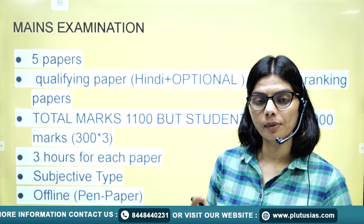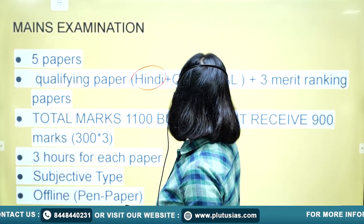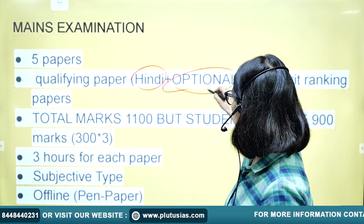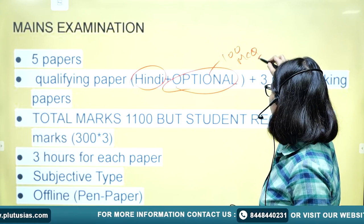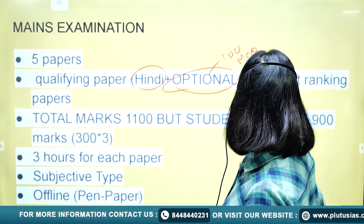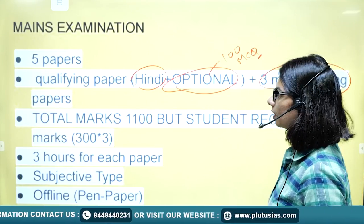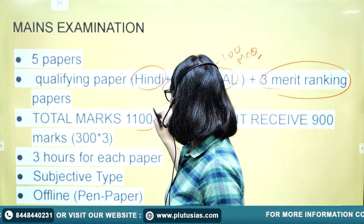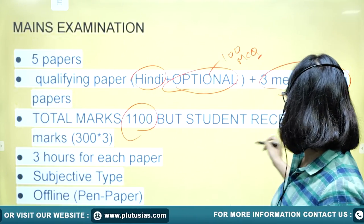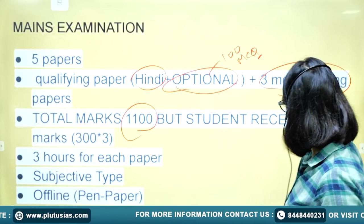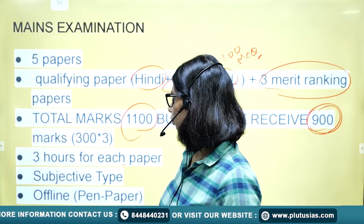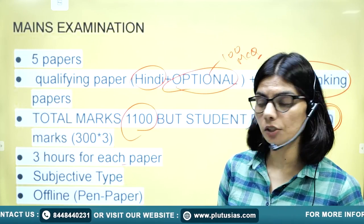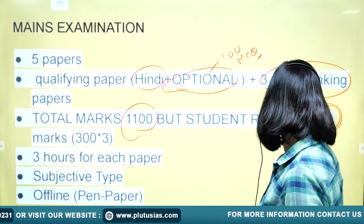In mains examination, you will have total five papers and two papers will be qualifying — Hindi paper and your optional paper. The optional paper is 100 marks, in the form of MCQ, and it's just a qualifying paper. Three papers will decide your merit for the ranking, and total marks will be 1100, but students will receive ranking on the basis of 900 marks. All the papers will be conducted for three hours in subjective mode, offline pen and paper examination.